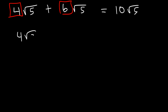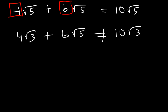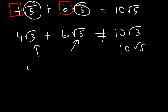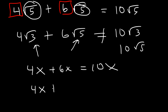If you have 4 radical 3 plus 6 radical 5, you cannot add 4 plus 6 — would it be 10 root 3 or 10 root 5? It doesn't work because these two are not the same. You can only add them if they're the same, just like 4x plus 6x is 10x, but 4x plus 6y is not 10xy. You can only add or subtract like terms.